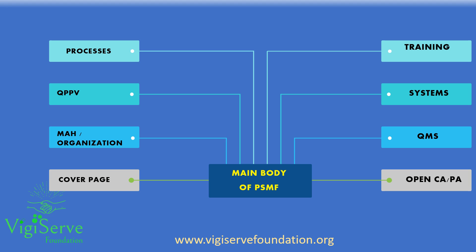The PSMF shall also contain a note associated with any major or critical findings associated with an audit. The corrective and preventive actions should be recorded in the main body of the PSMF and should remain until the actions are considered to be resolved. As a means of managing the pharmacovigilance system and providing a basis for audit or inspection, the PSMF should also describe the process for recording, managing and resolving deviations from the quality system.